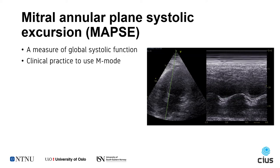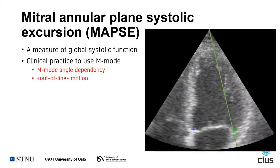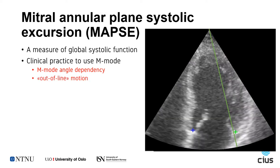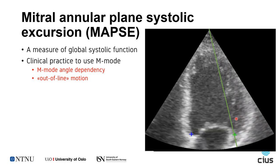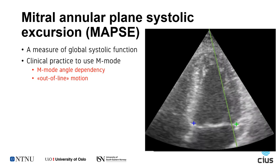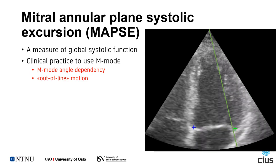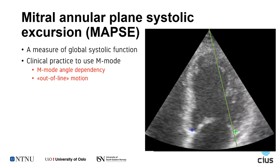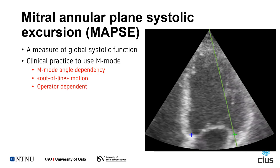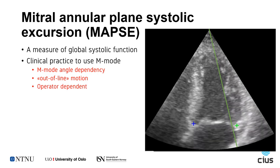This way of measuring has several issues. Firstly, the measurement is highly dependent on the angle of the M-mode line, and often the true annulus point can move in and out of the M-mode line, as shown in this video. The green point here moves in and out of the M-mode line. In these cases, you are not measuring the same physical point. Also, this measurement is, like all manual measurements, operator dependent.